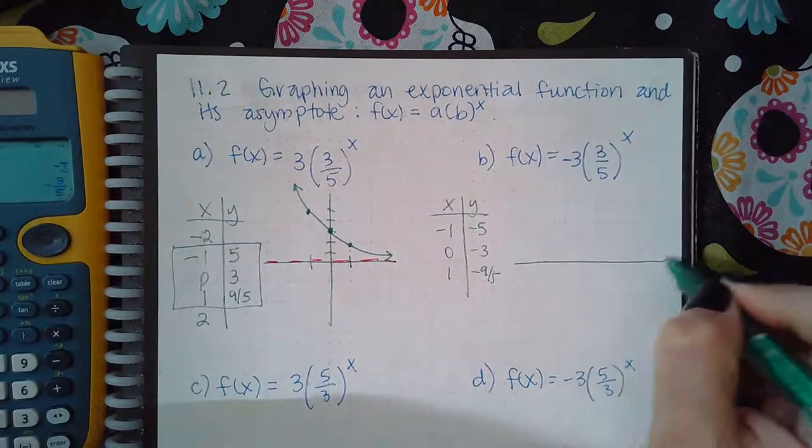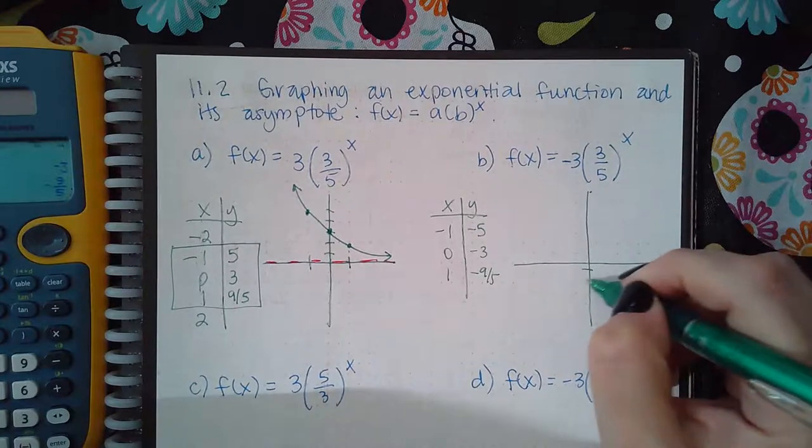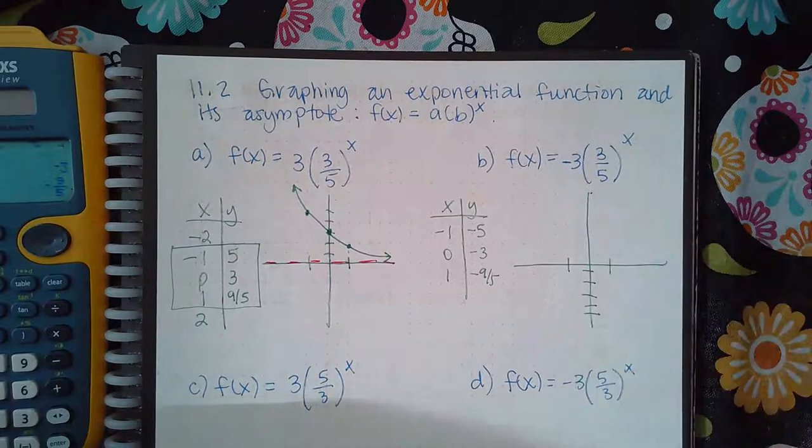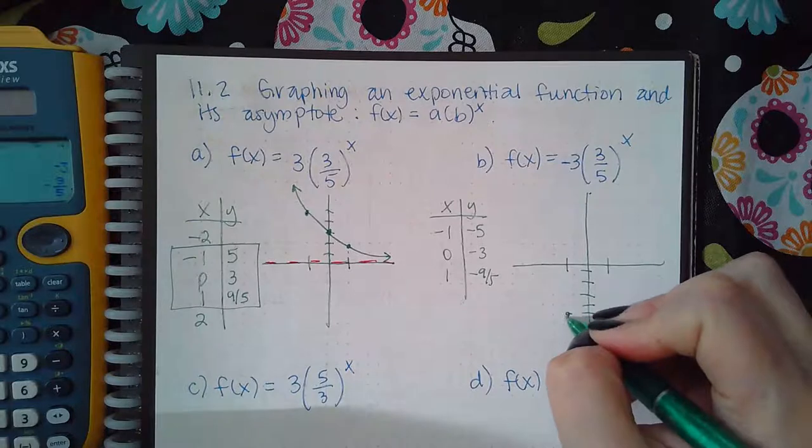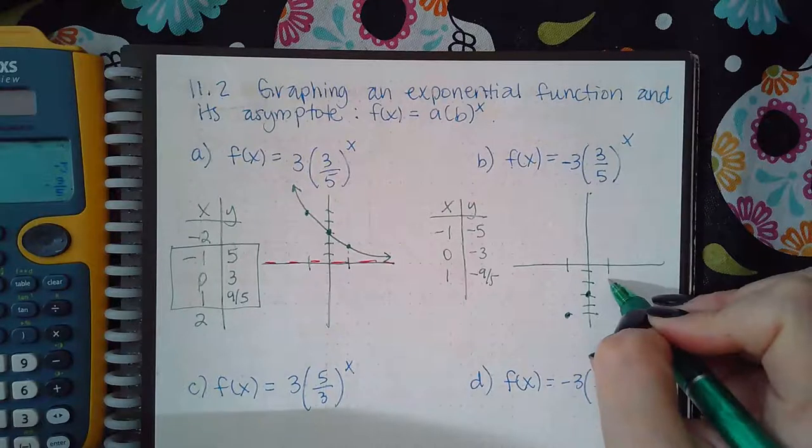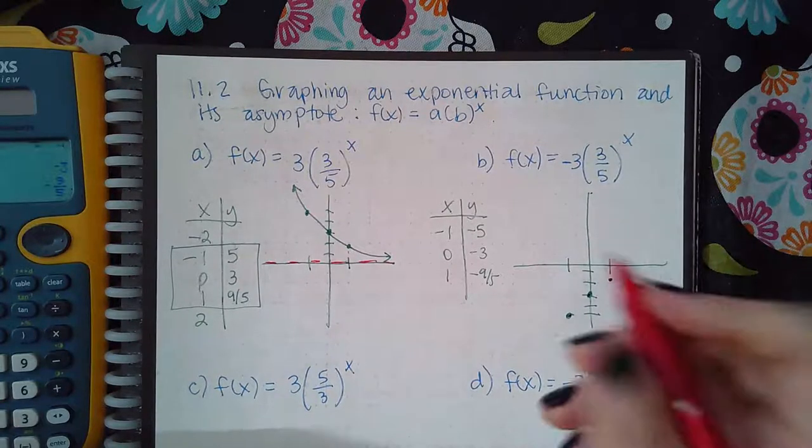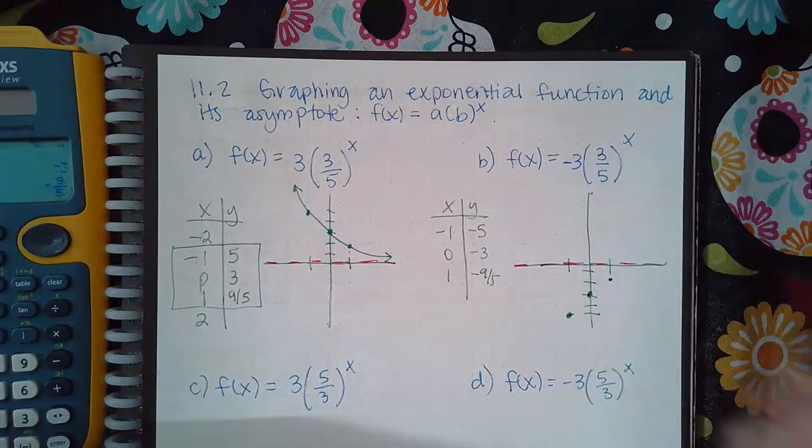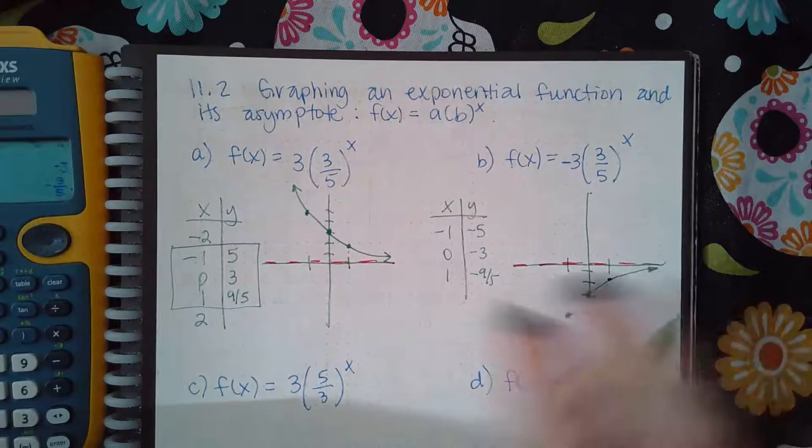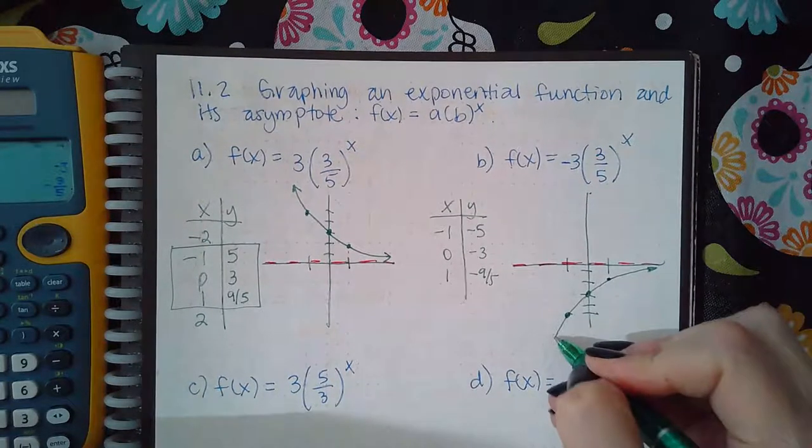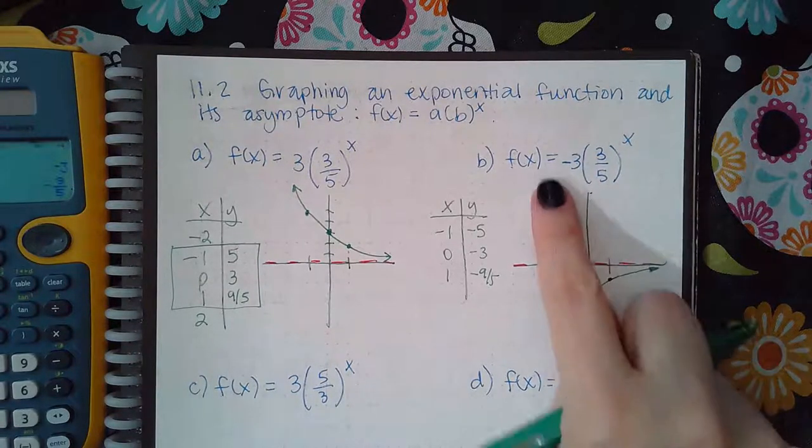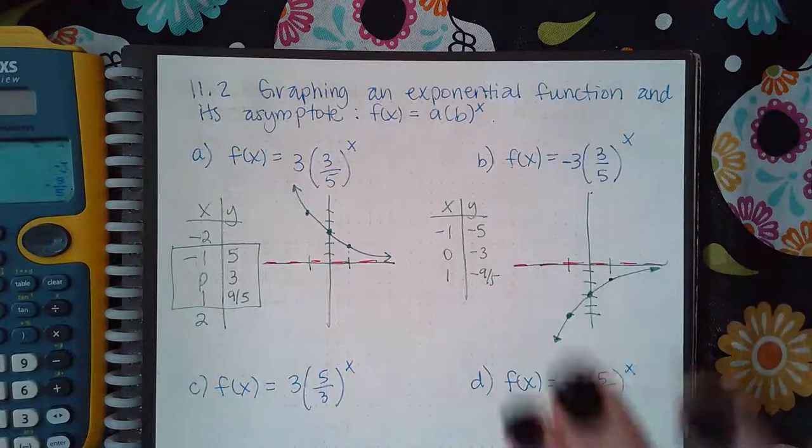So when I graph this, we get negative one and negative five. We get zero and negative three. And then we get one and negative one and four fifths. Your horizontal asymptote is on the x-axis. And so the graph does get close to the horizontal asymptote to the right, just like it did before. But notice that instead of going up, it's going down. And that's because of the negative coefficient causes it to flip over the x-axis.